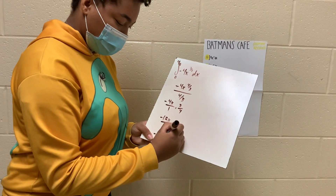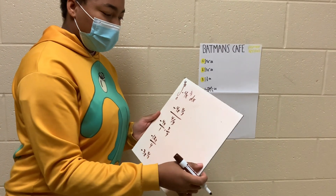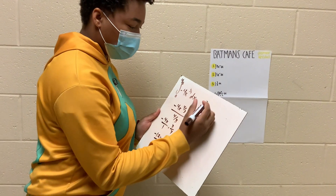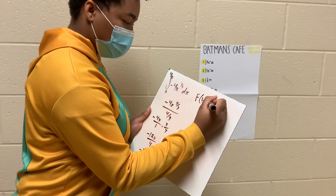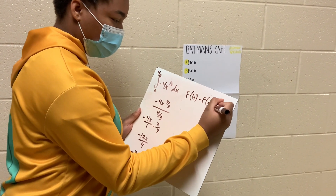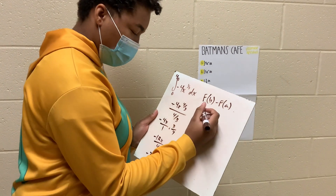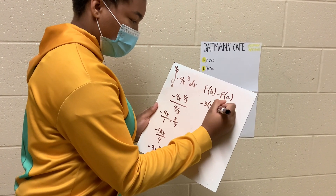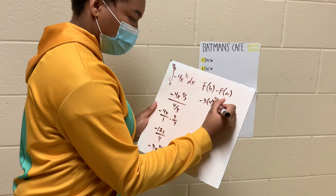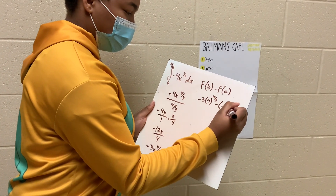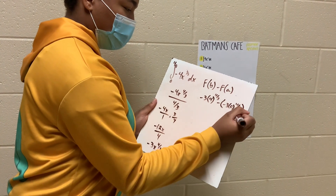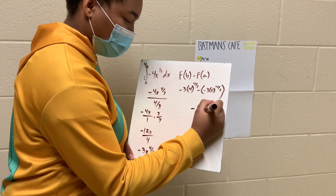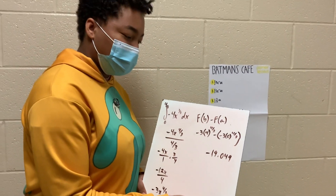And then we break down our exponent, and it would be 4 over 3. After that, we're going to want to use the first fundamental theorem of calculus to find our exact value. That equation is F(b) minus F(a). So we plug that in: negative 3 times 4 to the 4 thirds, minus negative 3 times 0 to the 4 thirds. After that, we can use a calculator to get our exact value, and that is equal to negative 19.049. And that is how you do number 6.